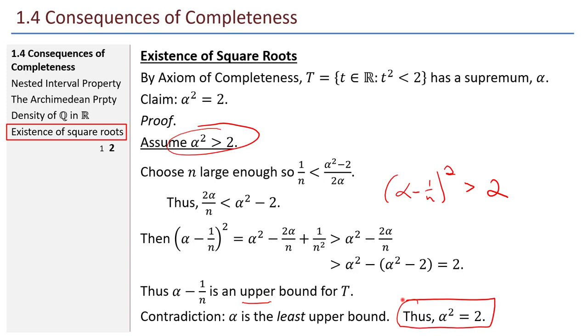That finishes our 1.4 Consequences of Completeness. These are four pretty significant characteristics of the real numbers, and they all come about from the Axiom of Completeness.